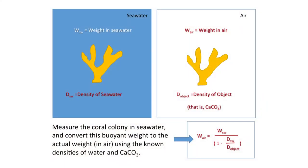A third way of measuring calcification is to use the buoyant weight method. In this method, coral fragments or other calcifying organisms are weighed underwater. If you know the density of calcium carbonate, you can calculate the amount of calcium carbonate added to the coral over time. This is a very useful technique because it can be done safely under field conditions and does not involve killing the coral, meaning multiple measurements can be made over a series of time points under both laboratory and field conditions.